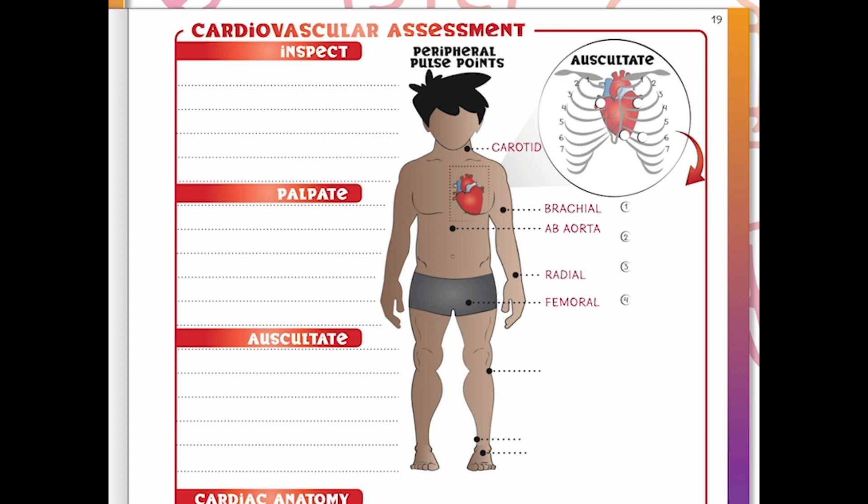The femoral pulse is one of the best places to check in the middle of a code or trauma. Push your first and third fingers down into the notch of the patient's groin. You can also use a Doppler in there to listen for any heartbeat or activity. The beautiful thing about using a Doppler in the groin is that the entire room can hear it — if there's no sound, there's no pulse, but if you hear it, everyone can assess how strong or thready that pulse is.